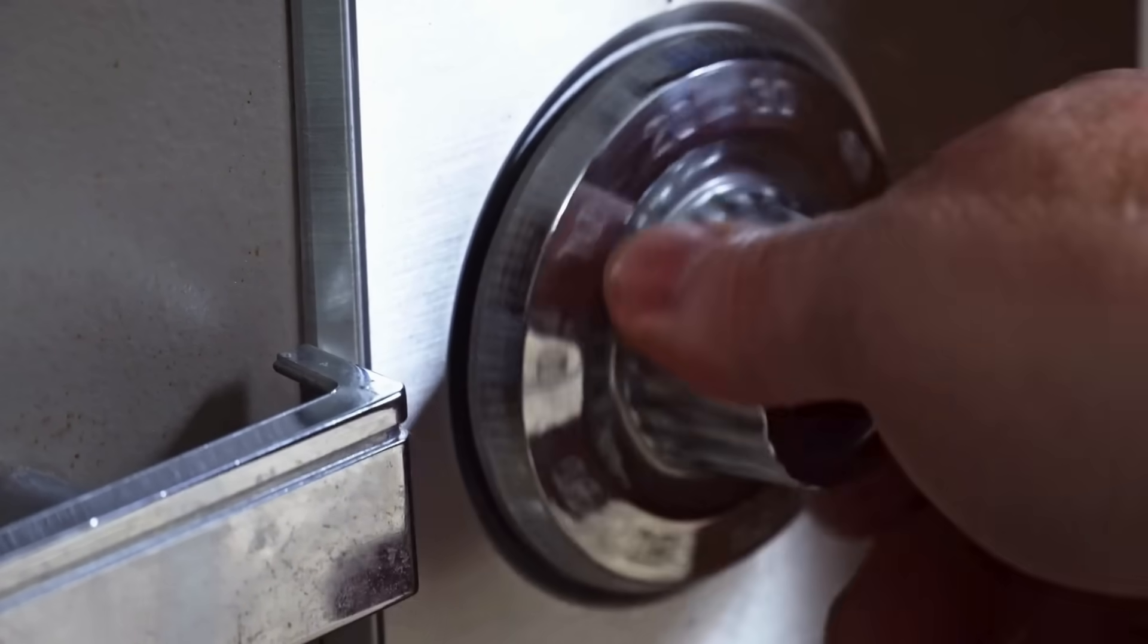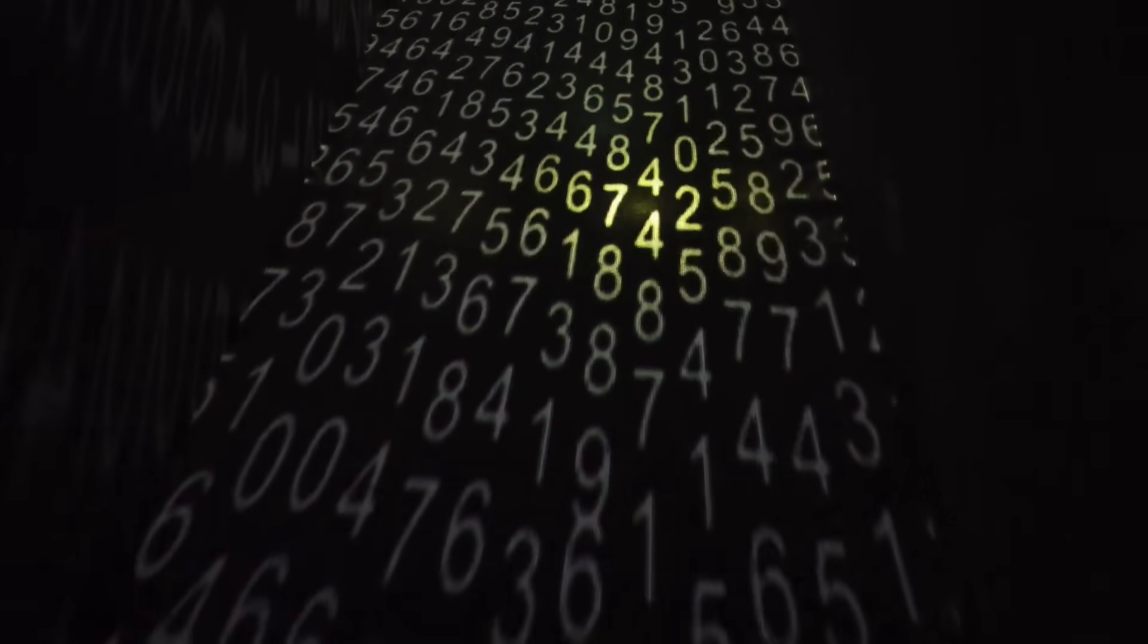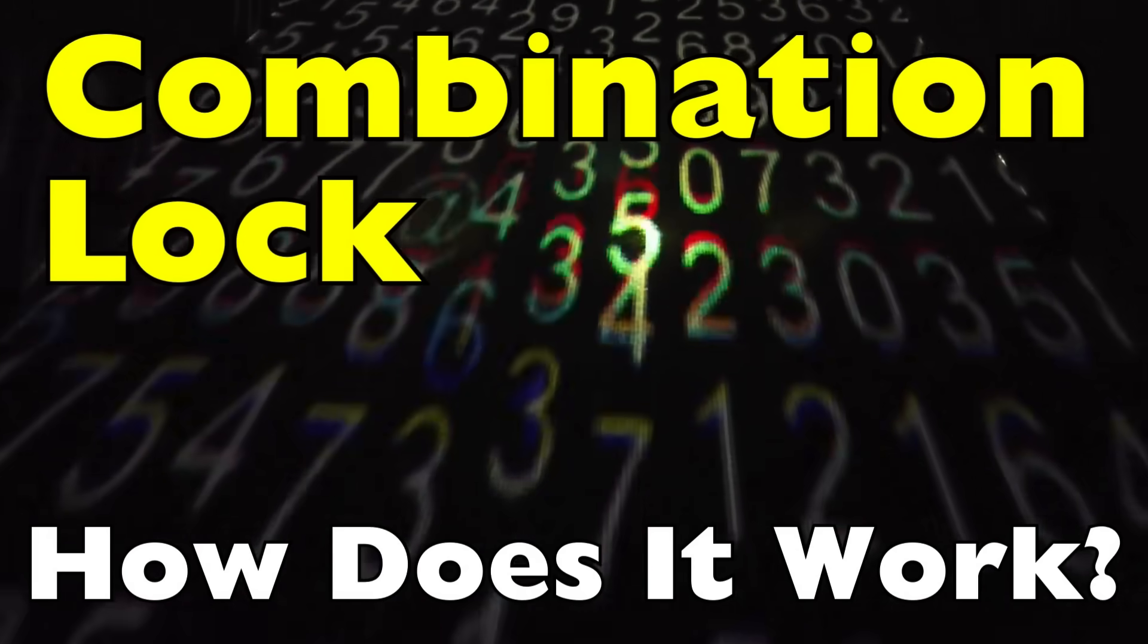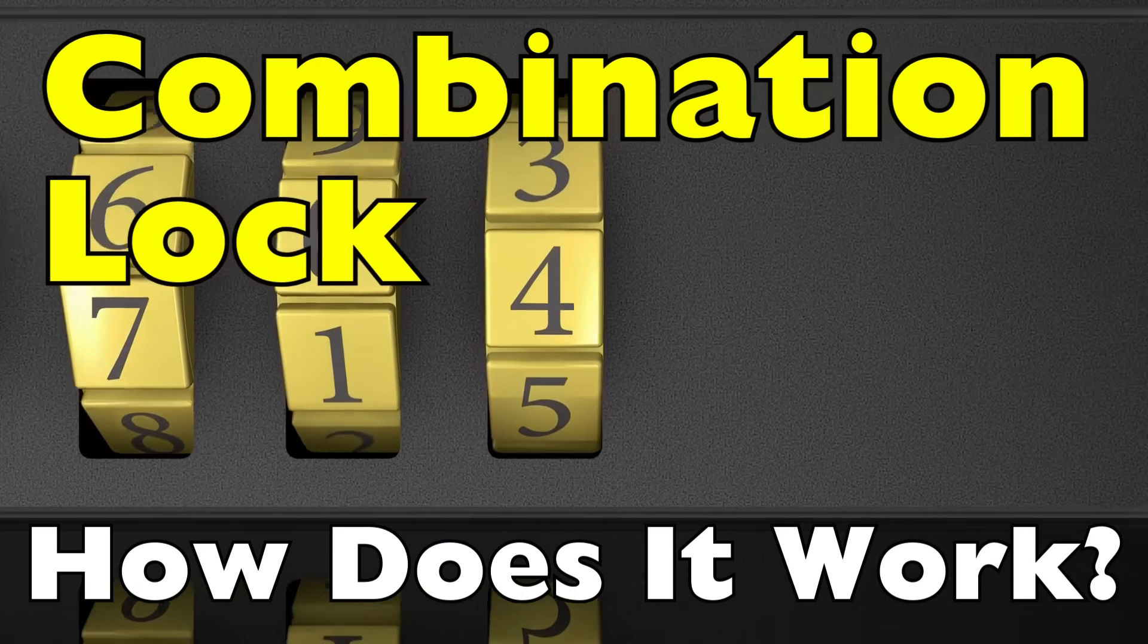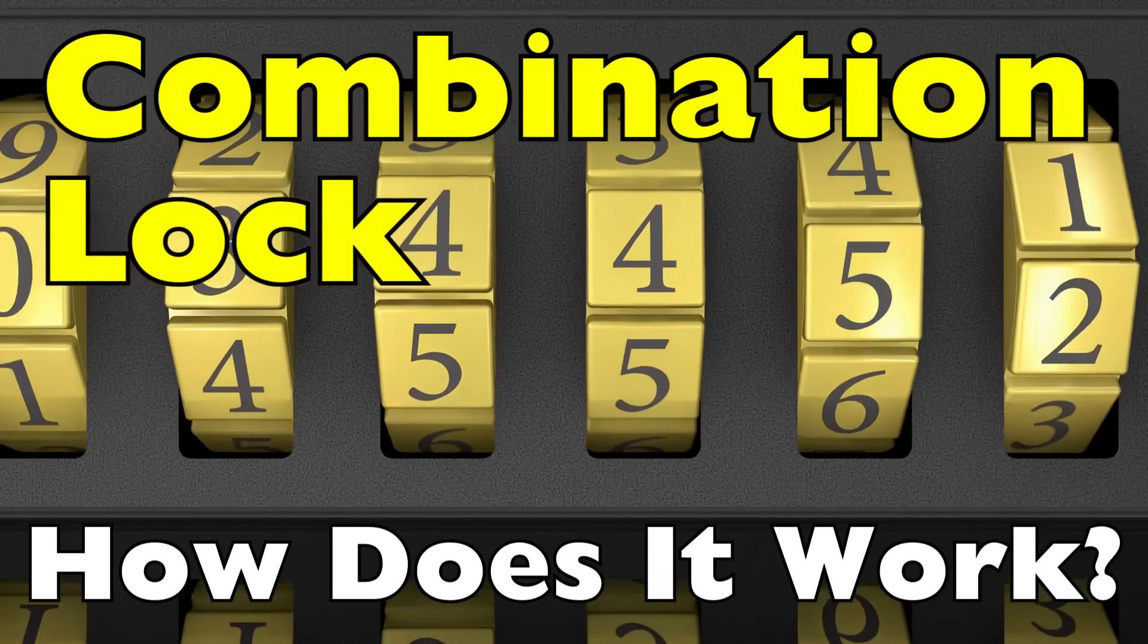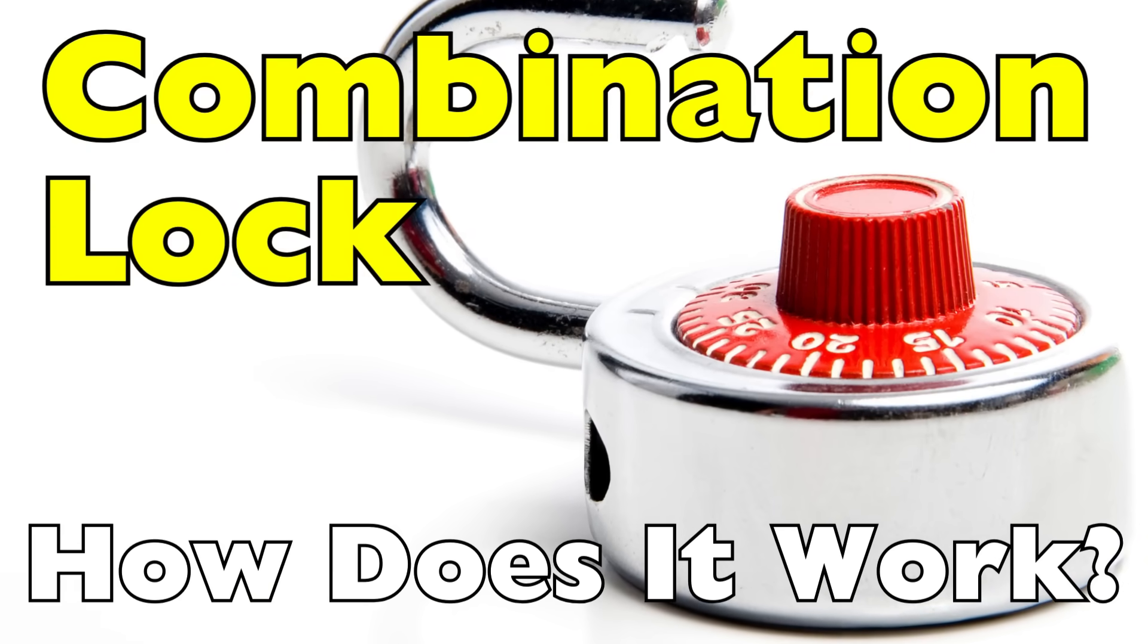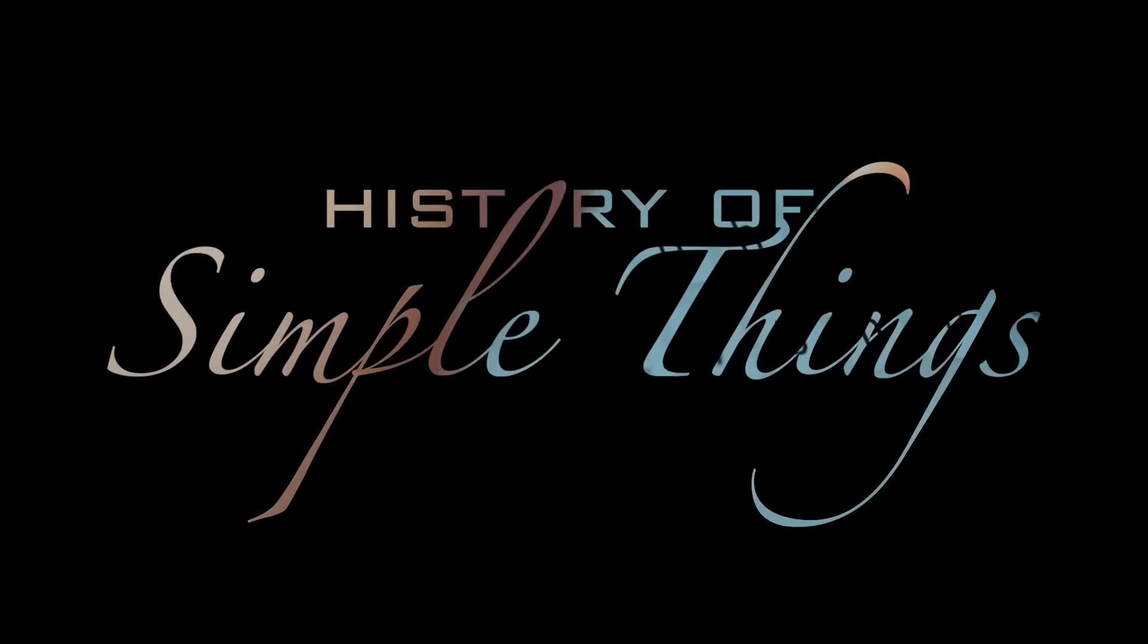These little devices are so common in everyday life that we barely think about them. In this video, we'll break down how a combination lock actually works, why the steps are so specific, and why this centuries-old design is still around today. The answer turns out to be more fascinating than you might expect, right here on History of Simple Things.